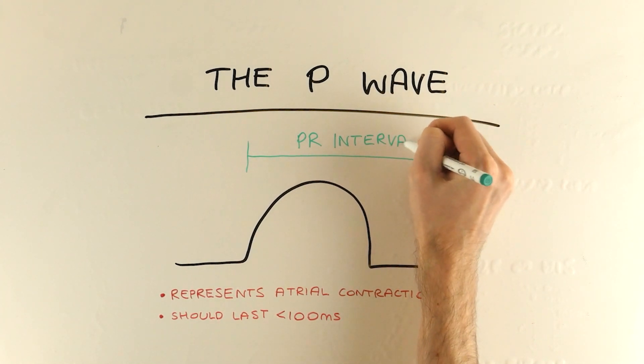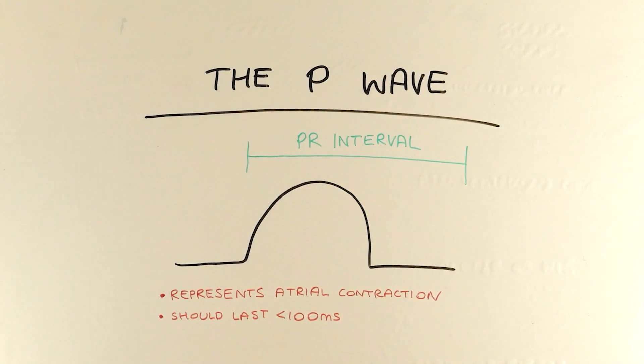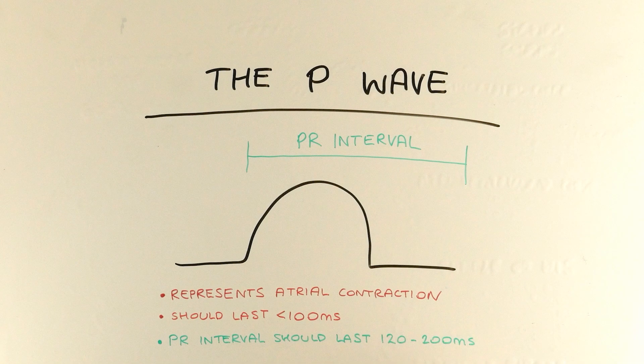Otherwise we'd get poor cardiac output. We measure this period from the beginning of the P wave to the beginning of this next set of waves, which is called the PR interval, and it should last 120 to 200 milliseconds.